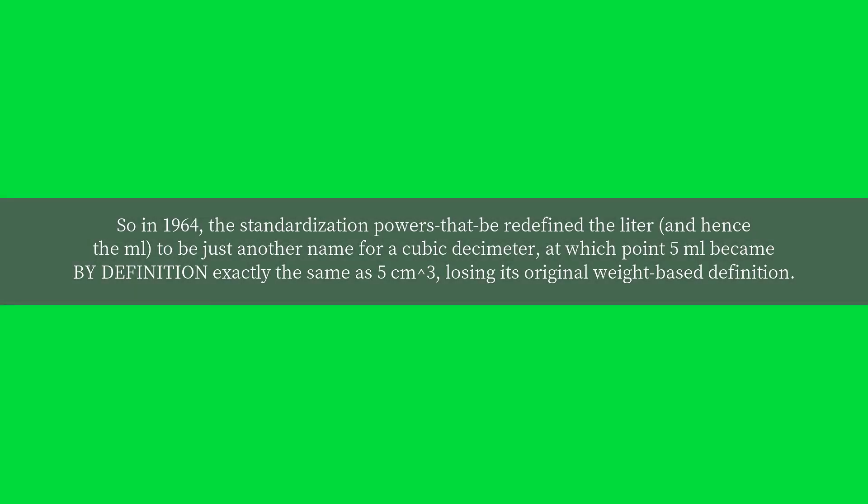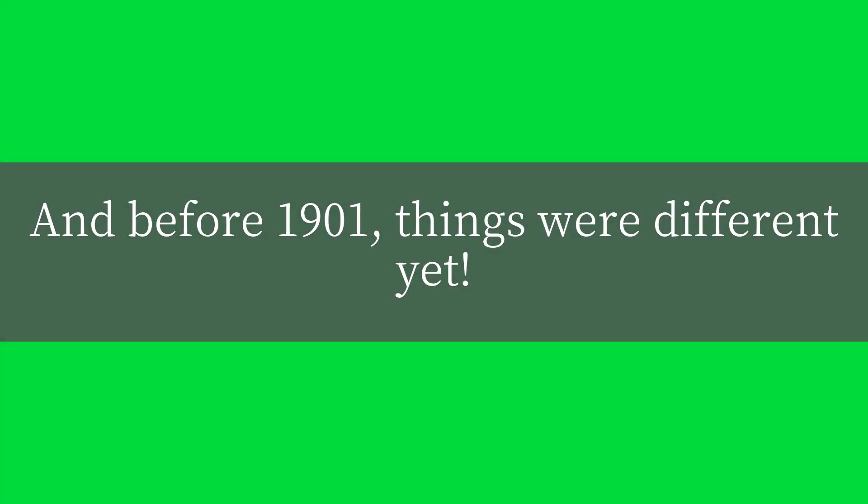So in 1964, the standardization powers that be redefined the liter, and hence the ml, to be just another name for a cubic decimeter, at which point 5 milliliters became by definition exactly the same as 5 cm³, losing its original weight-based definition. And before 1901, things were different yet.